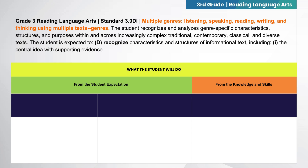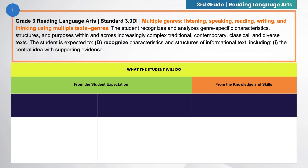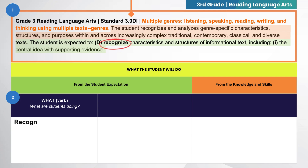Now let's deconstruct the reading and language arts standard 3.9DI. First, indicate the standard you will be deconstructing. In this case, our standard is 3.9DI. Second, refer to the student expectation to determine the what by asking: what are students doing to demonstrate their learning? Then identify the action verb. In 3.9DI, the verb recognize indicates what students are doing to demonstrate their understanding.